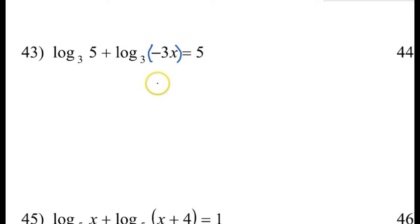Okay, so it seems like we should do the product rule and condense these down into a single log. So I could write this as log base 3, and then I'm going to multiply these together as I condense it. So that's going to be log base 3 of negative 15x is equal to 5. Does that make sense so far?